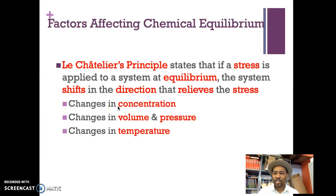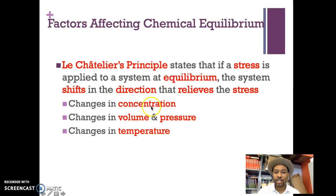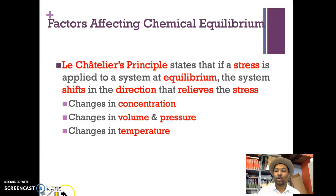Some factors that can stress a reaction — meaning certain things that can affect how the reaction is going — include changes in concentration, changes in volume and pressure, and changes in temperature. These things can affect the equilibrium of a reaction and push it to go in one direction or the opposite direction.